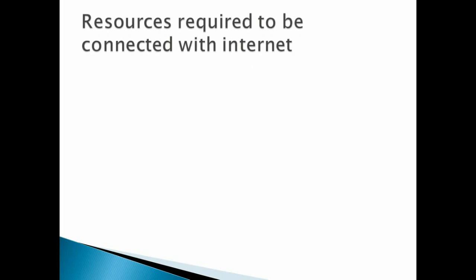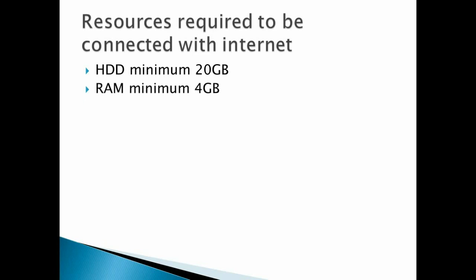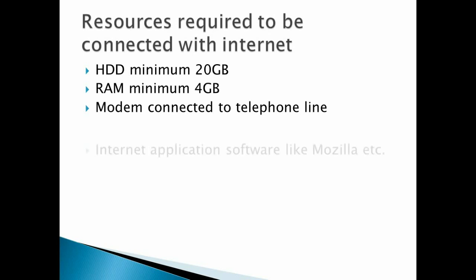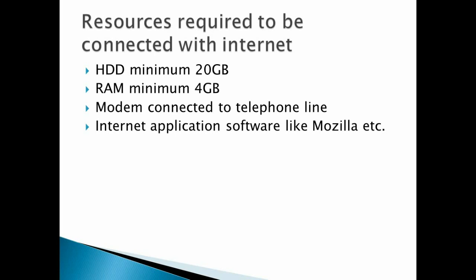Next — resources. What are the different resources required to connect to the internet? Some devices are required. In a computer, the hard disk should be at least 20 GB, RAM minimum should be 4 GB, and there should be some modem — either a telephone line or a small modem device connected to the CPU so the CPU can connect to the internet. Also, internet applications or software like Mozilla, Google Chrome, or Opera Mini — these are different types of browsers through which you can connect to the internet.